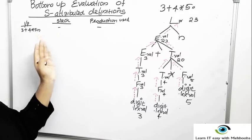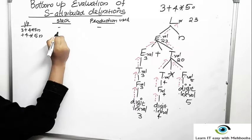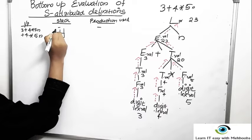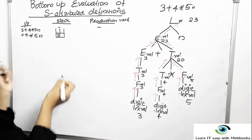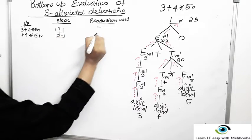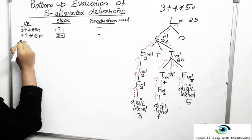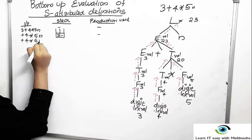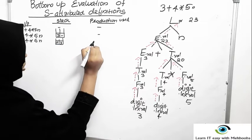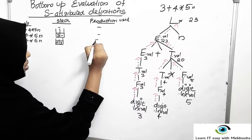We shift the first symbol 3 onto the stack. Since 3 does not have any attribute value we put a minus. No production is used. Next, we reduce 3 to F — F will be the grammar symbol and 3 will be its attribute value. The production used is F gives digit.